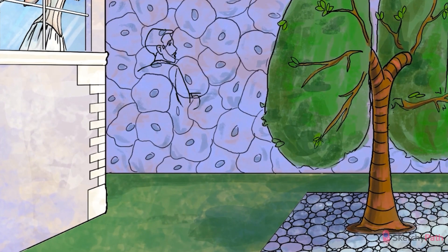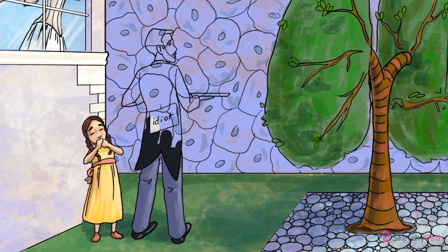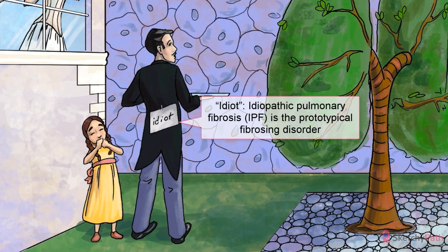See that idiot sign on the butler? Idiopathic pulmonary fibrosis is its own defined syndrome, and it's considered the prototypical fibrosing disorder. In other words, if you understand idiopathic pulmonary fibrosis, you at least understand the fibrotic aspect common to many of the intrinsic lung diseases throughout this chapter. Idiopathic pulmonary fibrosis specifically accounts for about 30% of all restrictive lung disease cases.